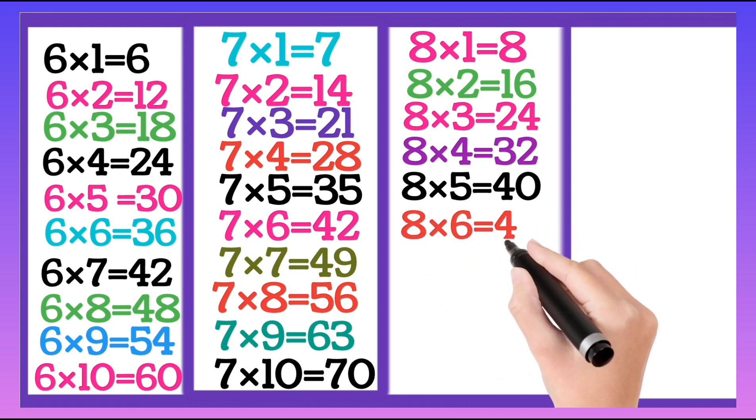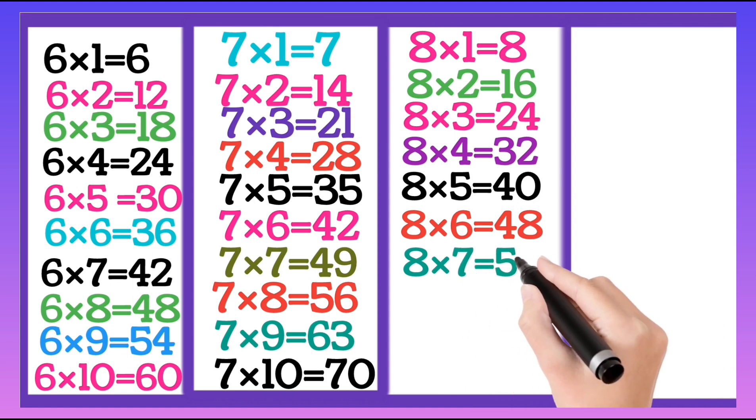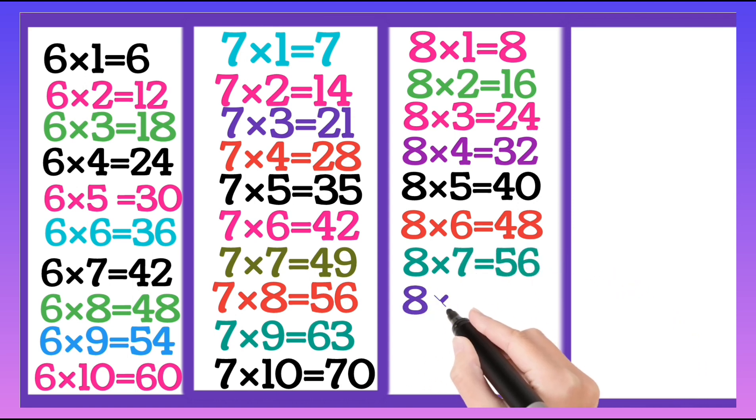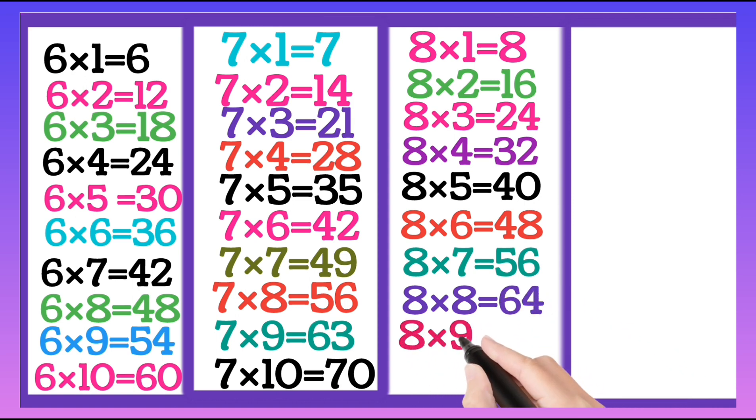8 sixes are 48, 8 sevens are 56, 8 eights are 64, 8 nines are 72, 8 tens are 80.